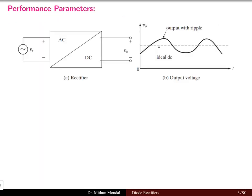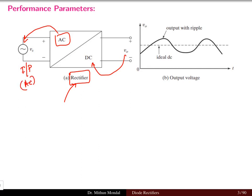Now let us look at performance parameters. A rectifier takes AC as input and produces DC as output — it is a converter which converts AC supply to DC supply. This AC supply can be either single phase or three phase. The output can be half wave or full wave depending upon how many cycles or positive or negative halves are being rectified.